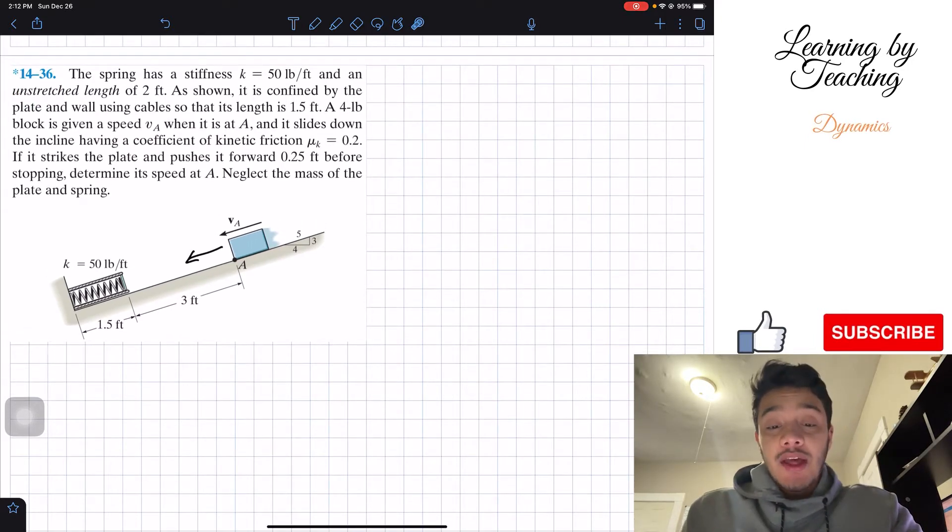It says the spring has a stiffness k equal to 50 pounds per foot and an unstretched length of 2 feet. As shown, it is confined by the plate and wall using cables so that its length is 1.5 feet. A 4 pound block is given a speed v_A when it is at A and it slides down the incline having a coefficient of kinetic friction mu_k equal to 0.2. If it strikes the plate and pushes it forward 0.25 feet before stopping, determine its speed at A. Neglect the mass of the plate and the spring.